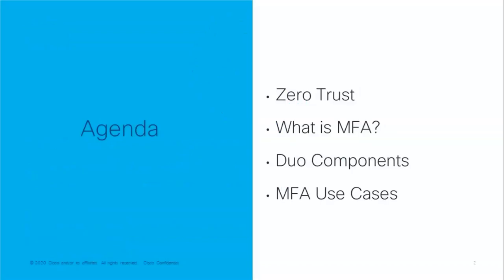What we are going to cover in this session is: we are going to touch on the Zero Trust model, and then talk about multi-factor authentication — what it is, what are the use cases, why we need MFA. Then we are going to go through the use cases using Cisco Duo, which is our multi-factor authentication solution. We will explore the components involved in the overall solution, and then we will deliver some demos as well.